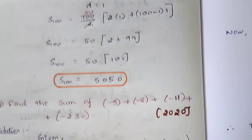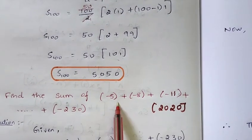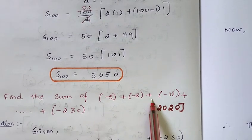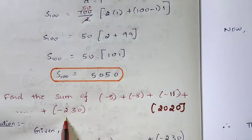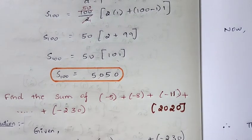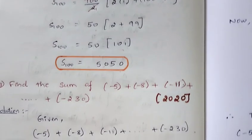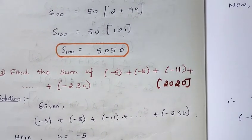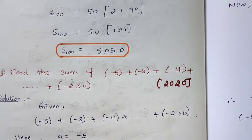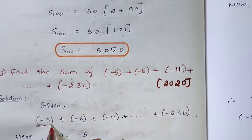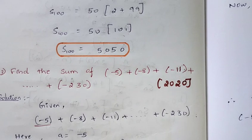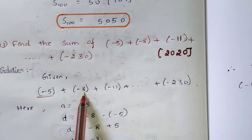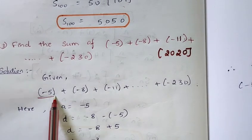The next question is: find the sum of -5 plus -8 plus -11 plus so on plus -230. We need to find the total sum of this series. This is also a simple question. First, we identify the first term and the last term from the given series.